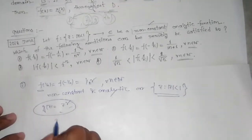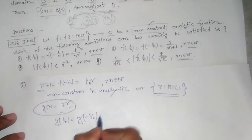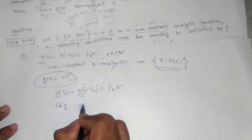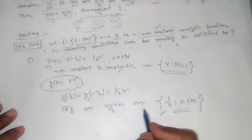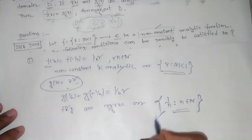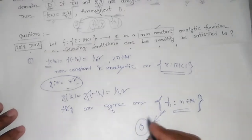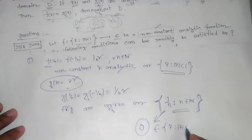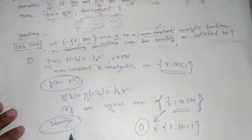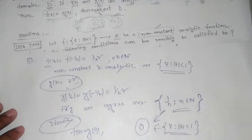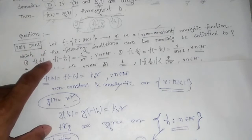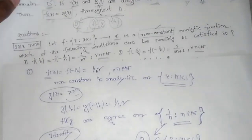We can see that g(1/n) = g(-1/n) = 1/n², so f and g agree on this sequence. This sequence has limit point zero, and zero belongs to the domain where f and g are analytic. So by the Identity Theorem, f(z) = g(z) = z² throughout this domain. Option 1 is true — a non-constant analytic function g(z) = z² exists.